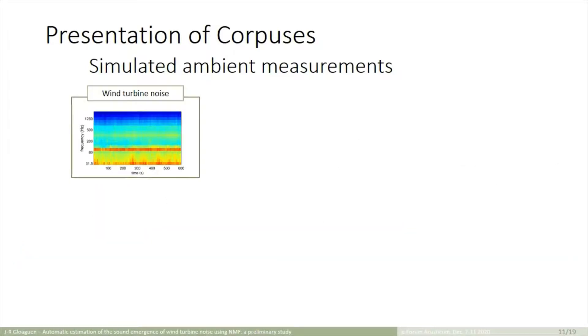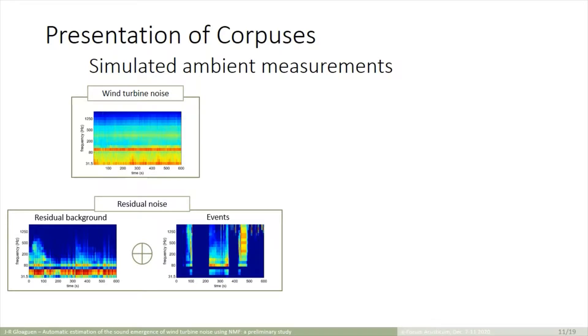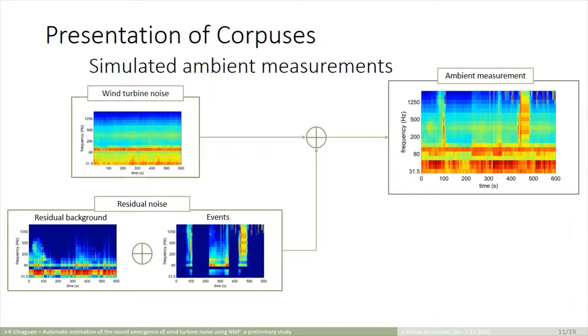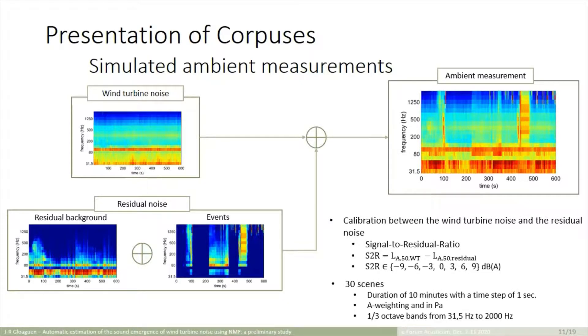The construction of the scenes is done as following. First, we select a 10 minutes wind turbine noise sample, and I said 10 minutes because it is the duration of our scene. The residual noise is built by summing the residual background noise with the sound events. And then, the wind turbine noise and the total residual noise are summed together to generate the ambient noise. And this sum is done by calibrating the residual noise in order to follow an indicator, the signal-to-residual ratio S2R. It is the difference between the wind turbine and the residual statistical sound labels. And this indicator is defined from minus 9 dB to 9 dB.